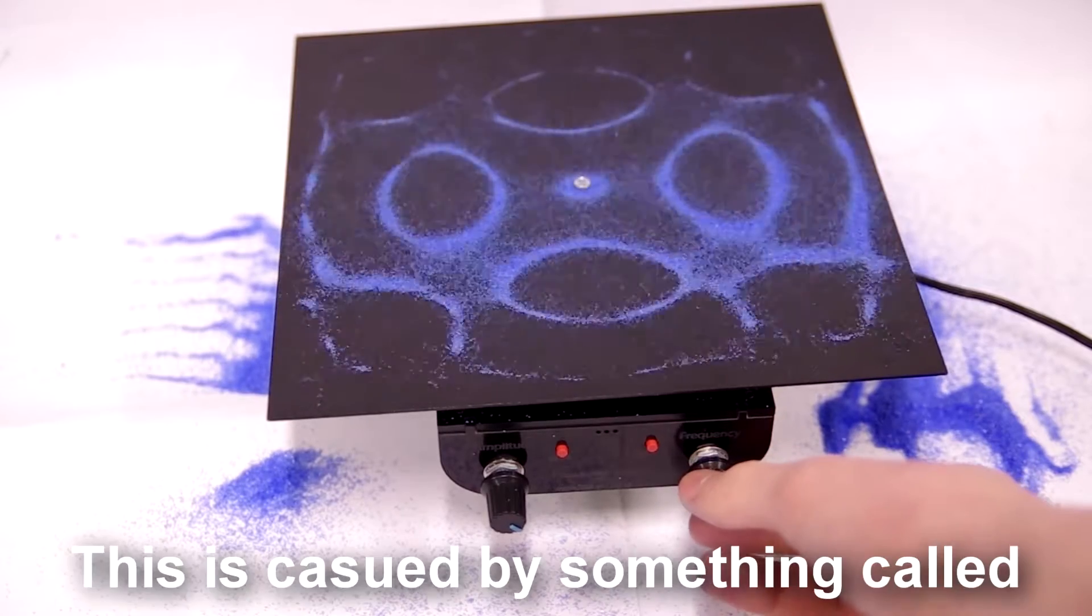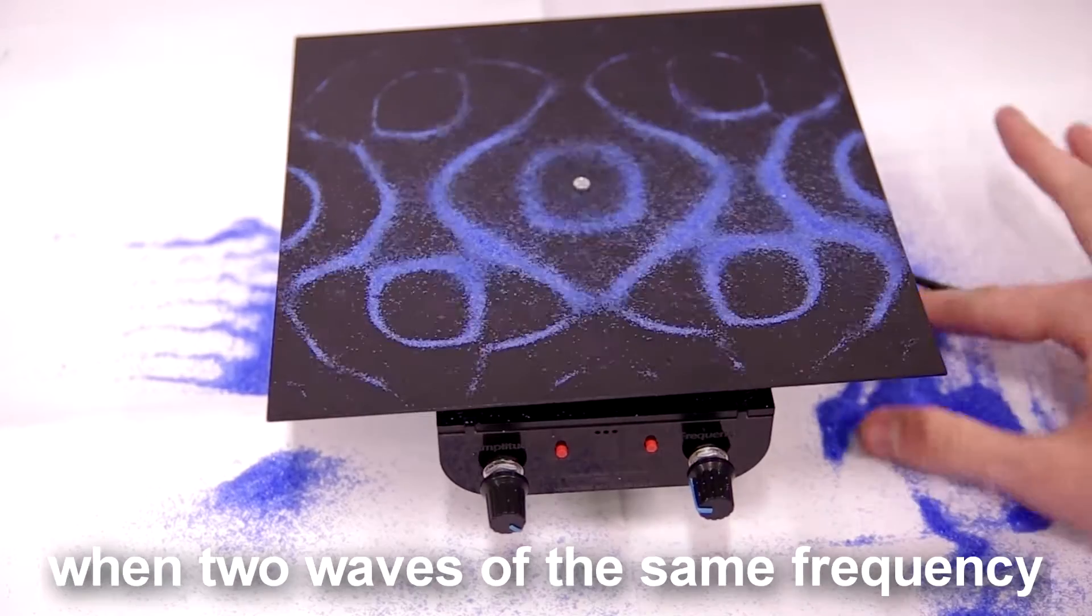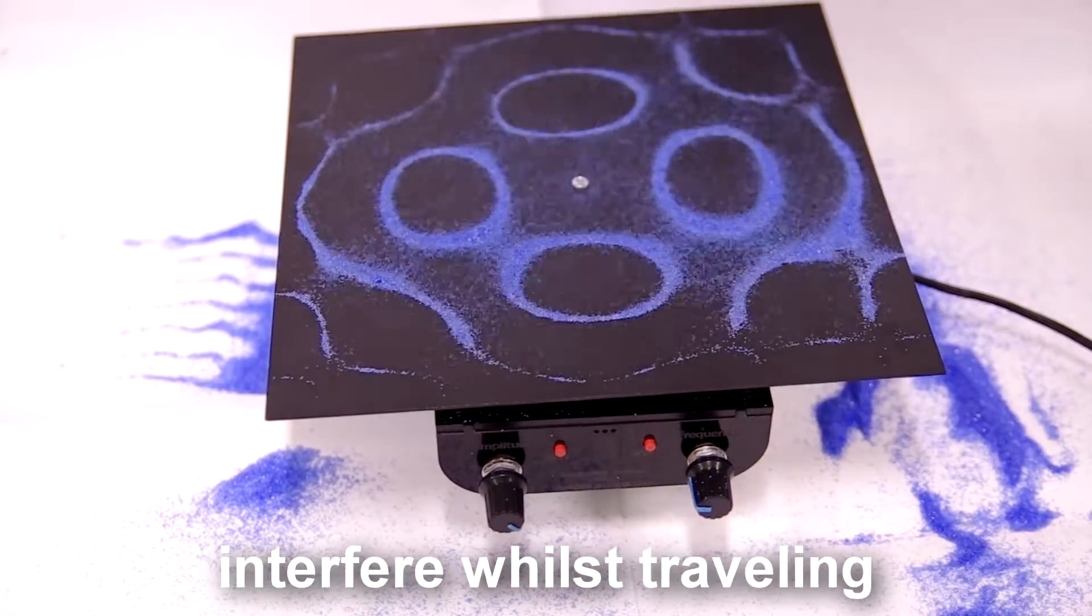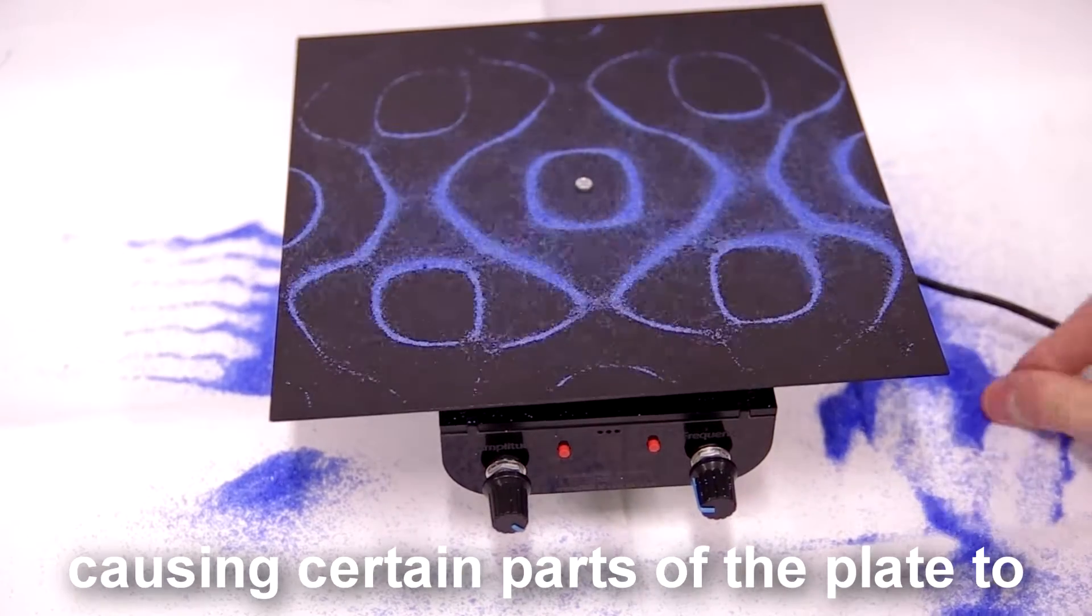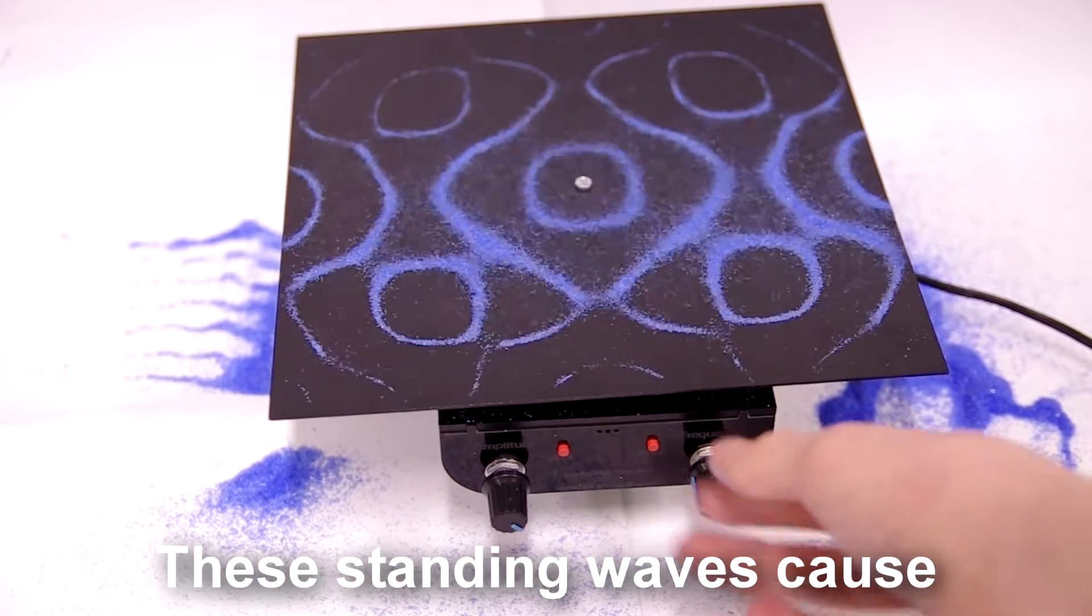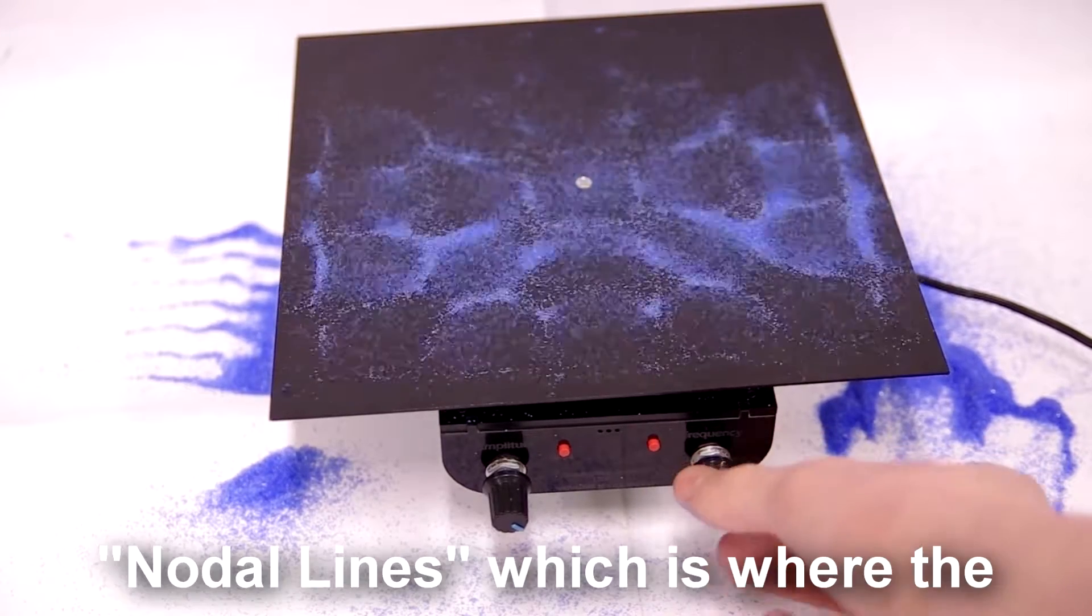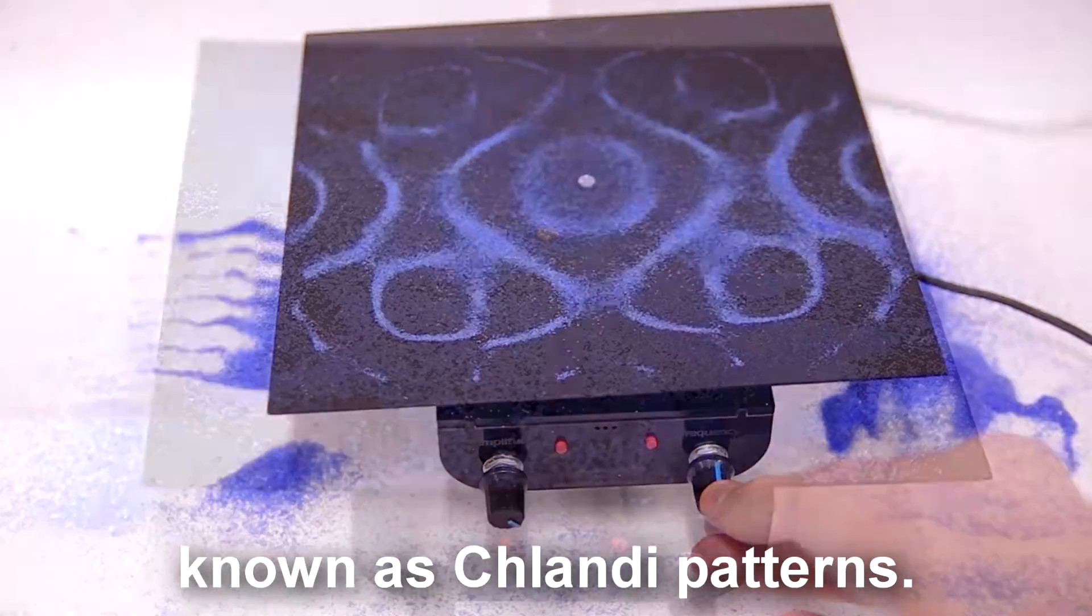This is caused by something called standing waves. A standing wave pattern is formed when two waves of the same frequency interfere whilst travelling in opposite directions, causing certain parts of the plate to remain fixed while other parts vibrate. These standing waves cause nodal lines where the sand settles, making the sand patterns known as Chladni patterns.